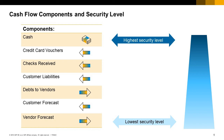The cash flow components are ordered by security levels. The most certain transactions are derived from cash accounts, such as bank accounts, then credit card vouchers and checks received.